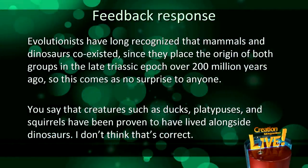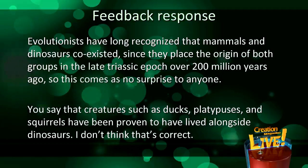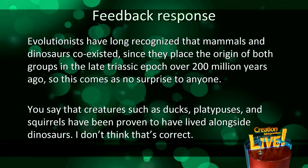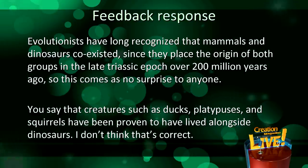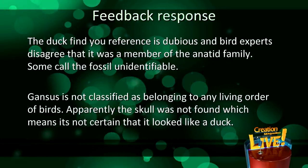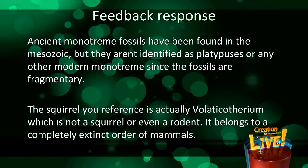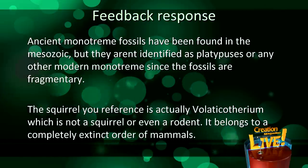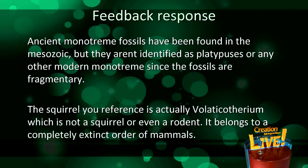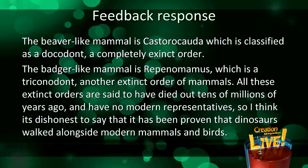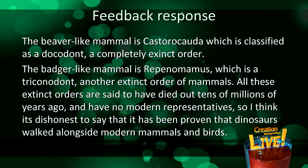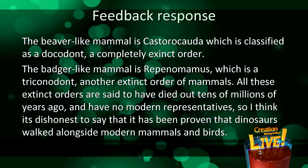Alex C said that evolutionists have long recognized that mammals and dinosaurs coexisted since they place the origin of both groups in the late Triassic, over 200 million years ago, so this comes as no surprise. He said it's not correct that ducks, platypus, and squirrels have been proven to have lived alongside dinosaurs. He argued the duck reference is dubious, the ancient monotreme fossils are fragmentary and not identified as modern platypuses, Volaticotherium is not a squirrel or even a rodent but belongs to a completely extinct order, and similarly the beaver-like and badger-like mammals are docotdonts and triconodonts — completely extinct orders. He concluded it's dishonest to say dinosaurs walked alongside modern mammals and birds.